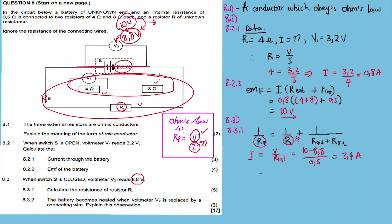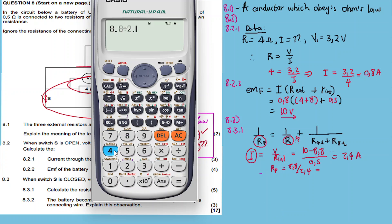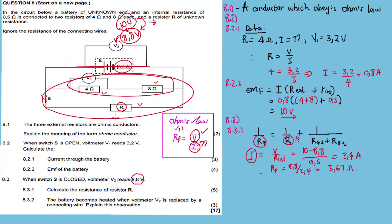Now we can calculate the total parallel resistance: R_parallel = V / I = 8.8 / 2.4 = 3.67 ohm. This is the total resistance of the parallel connection. Using the parallel resistance formula: 1/R_parallel = 1/R + 1/12, so 1/3.67 = 1/R + 1/12.